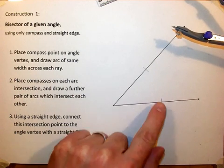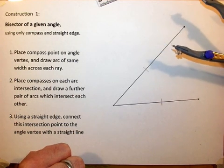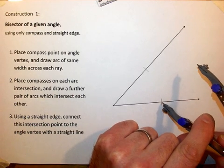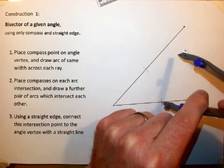From each of those two intersection points, we are going to draw a further arc. These two arcs should cross. We do that to the right of this angle.